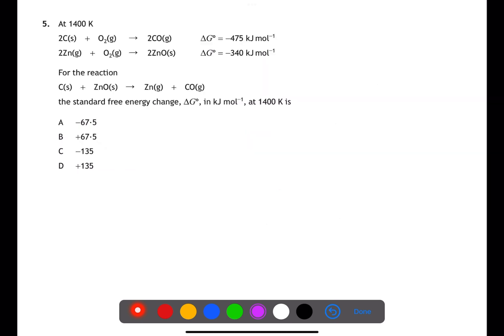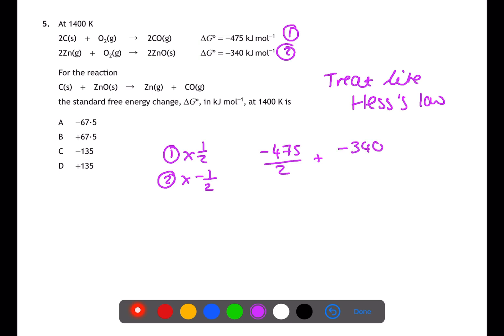For question 5 treat this as if it's a Hess's law calculation. You've been given two equations and an overall equation to aim for. For equation 1 we have the carbon in the correct place however we have two carbons not one so we need to multiply by a half. For equation 2 this needs to be flipped over but we also need to half this equation. This means we're going to multiply equation 1 by a half and equation 2 by negative a half. This then gives the value of negative 67.5 A.